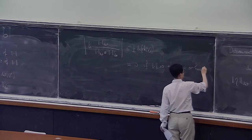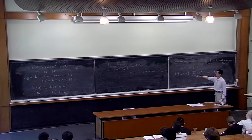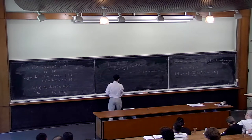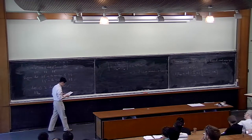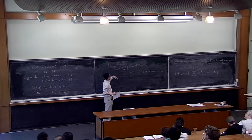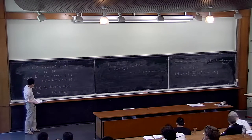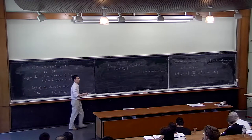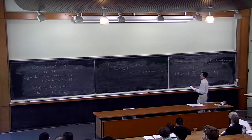On confond un peu les normes hermitiennes et euclidiennes. Si le corps est R et la norme est euclidienne, cette égalité est aussi vraie. On a l'isomorphisme entre deux espaces vectoriels de rang 1, et si vous avez des métriques au-dessus, vous pouvez comparer ces métriques, ce qui vous donne un scalaire bien défini.